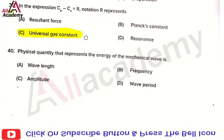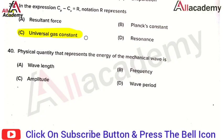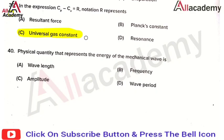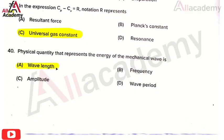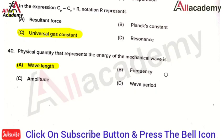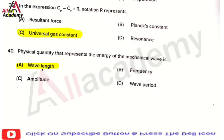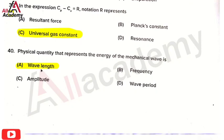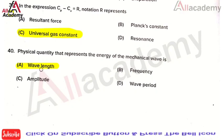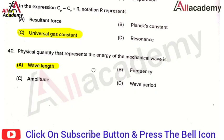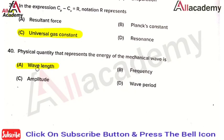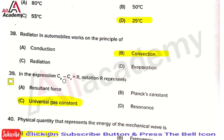The last question in the applied science section: the physical quantity that represents the energy of a mechanical wave is — the right answer is option A, that is wavelength. There is some uncertainty about this answer, but option A is the best choice.